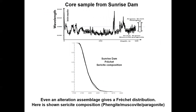This is also true at the scale of a drillcore. Here's a drillcore 500 meters long from Sunrise Dam in the Yilgarn, showing a plot of infrared wavelength — picking out the distinction between aluminium-poor, silicon-rich phengites and aluminium-rich, silicon-poor muscovites. This follows a very nice Fréchet distribution. Even an alteration assemblage gives a Fréchet distribution, and this is true for many other alteration assemblages as well.